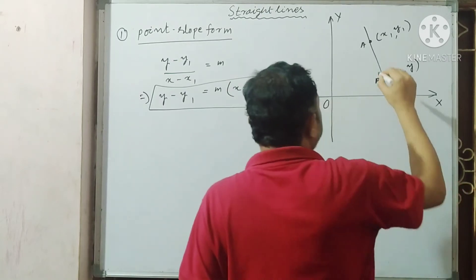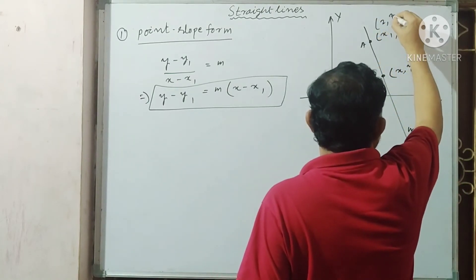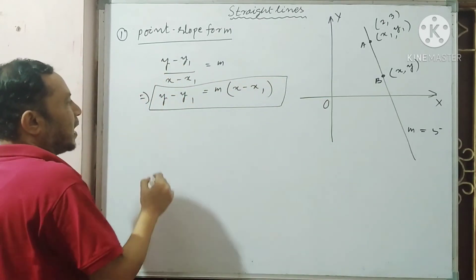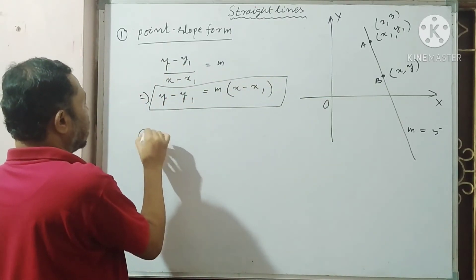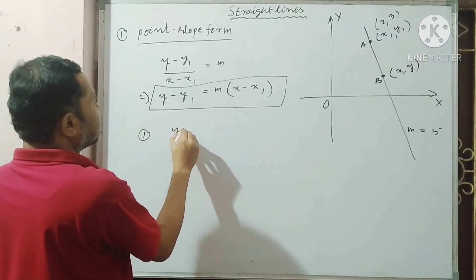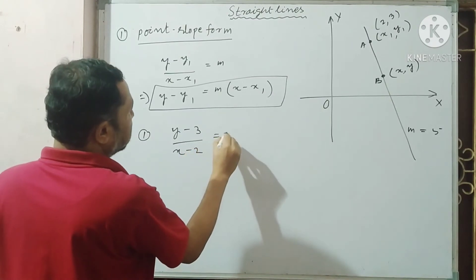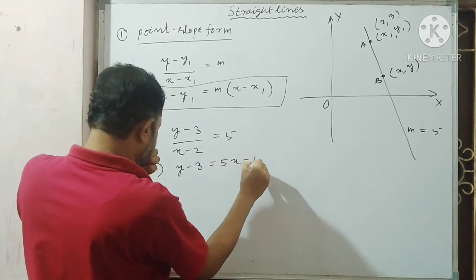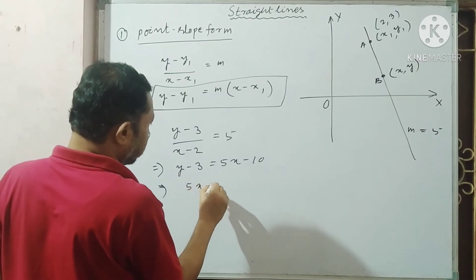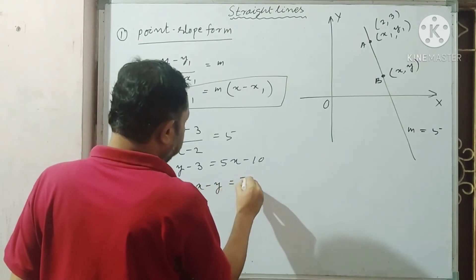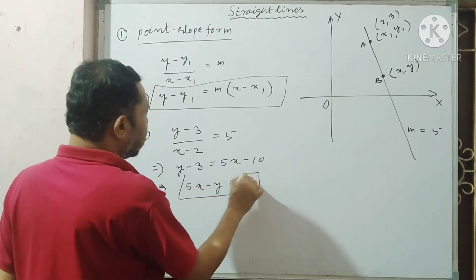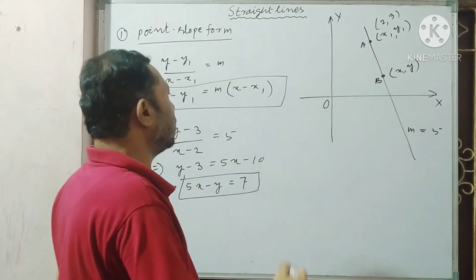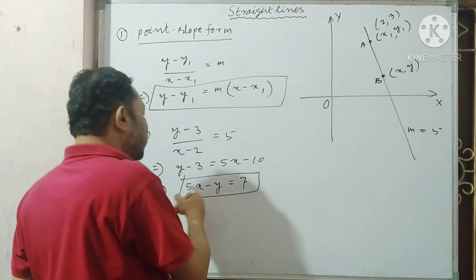Suppose a straight line is passing through the point (2, 3) and having slope 5. What is the equation of this straight line? The equation is: (y - 3) / (x - 2) = 5, or y - 3 = 5x - 10, which gives 5x - y = 7. This relation is the equation of the straight line, or the locus of the point — any point on it obeys this relation.